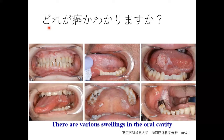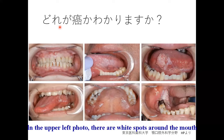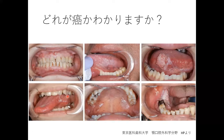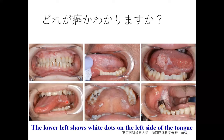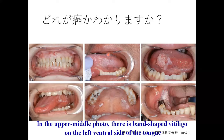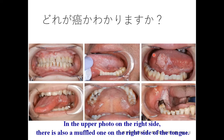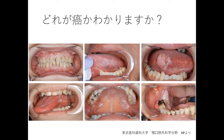There are various swellings in the oral cavity. Here are six photos — can you identify which ones are cancer? In the upper left photo, there are white spots around the mouth. The lower left shows white dots on the left side of the tongue. In the upper middle photo, there are band-shaped white patches on the left inner side of the tongue. In the lower middle photo, there are white spots behind the upper gum. In the upper right photo, there is also a white lesion on the right side of the tongue. And the last photo shows white spots behind the lower gum.